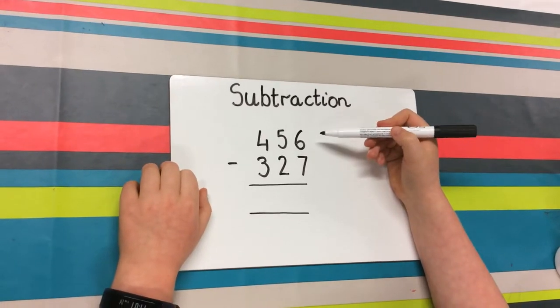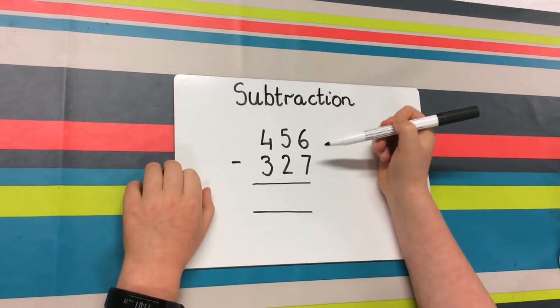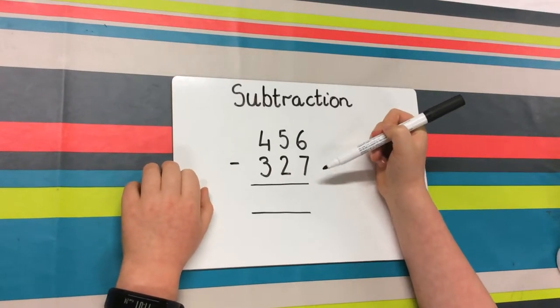You start off by taking the units. What do you do? 6 minus 7. You can't do that.